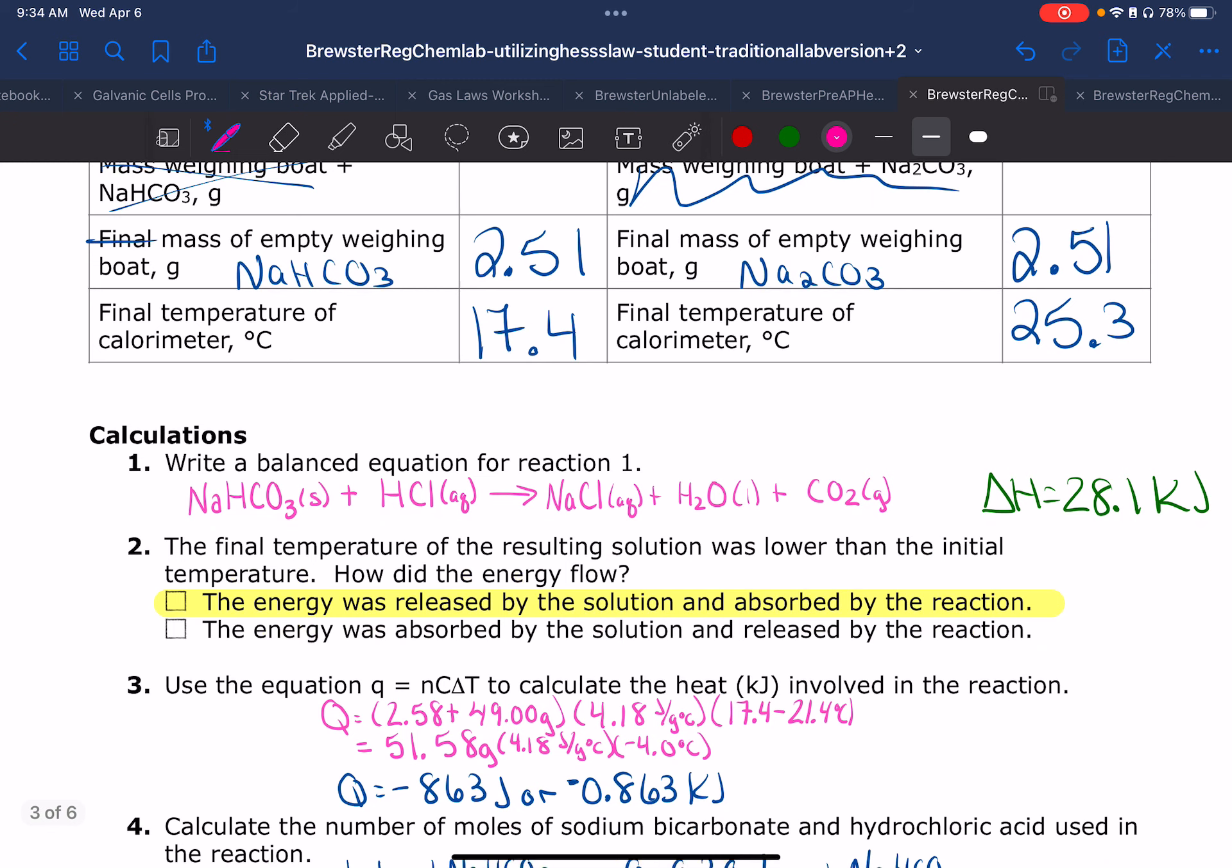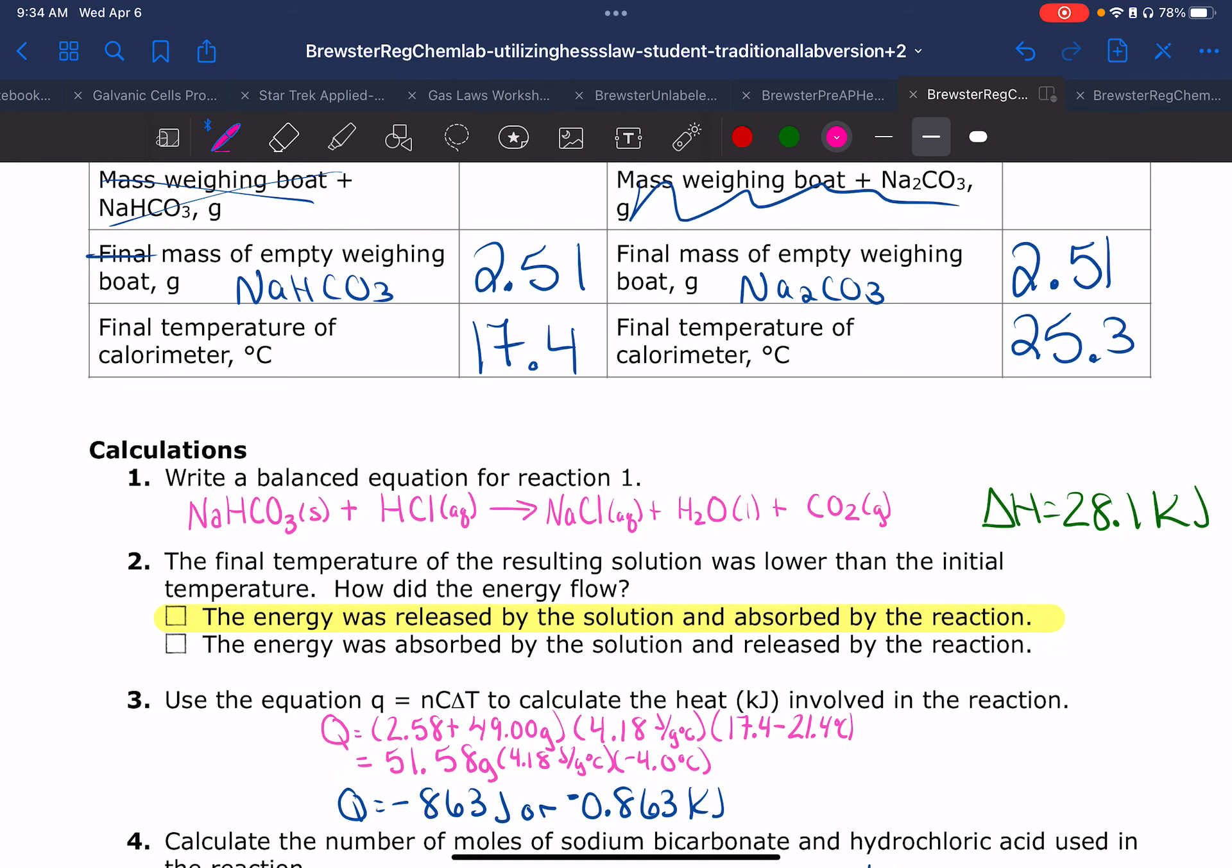Then we need to calculate for Q. We took a solid, we dissolved it in a liquid hydrochloric acid, so I need to add both those components into it. My mass is the addition of 2.58 for the solid plus 49 milliliters of HCl. We're assuming that it has basically the same density as water, which I mentioned in the prompt. We take that times 4.18, which is specific heat of water, times 17.4 minus 21.4, because the temperature dropped on the first reaction.